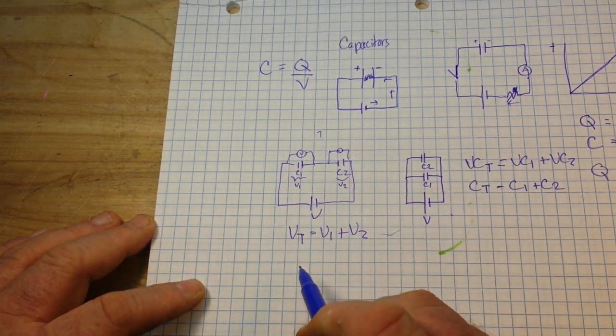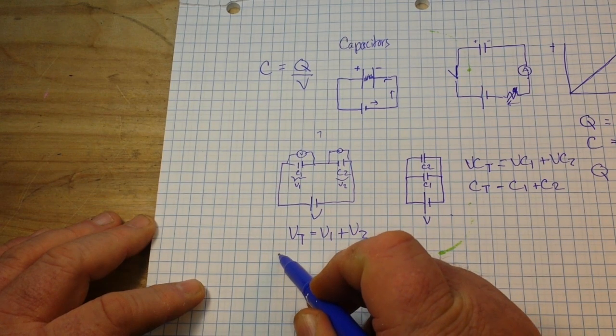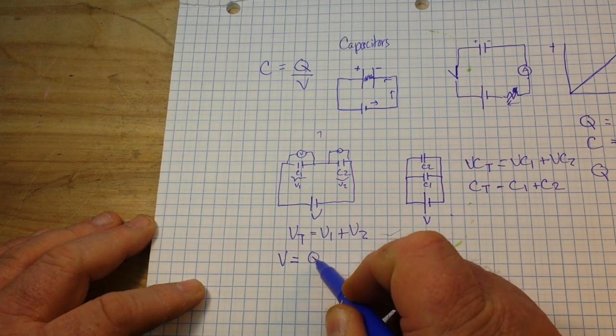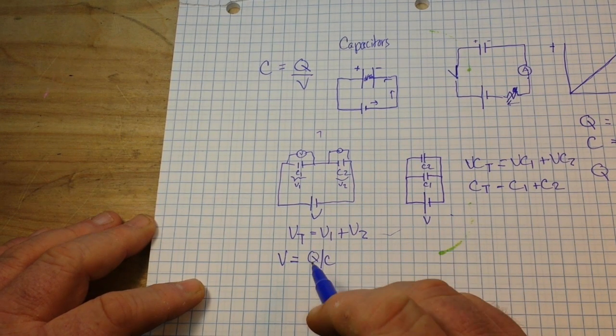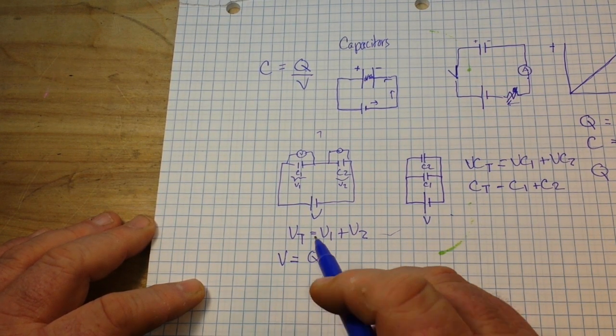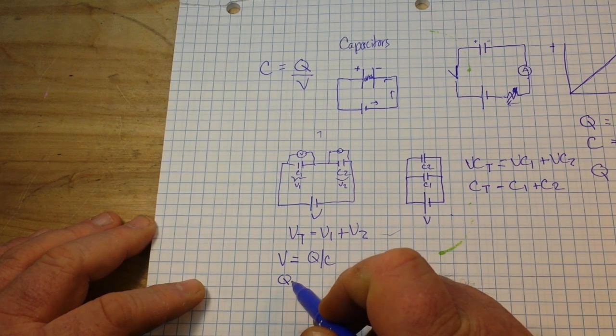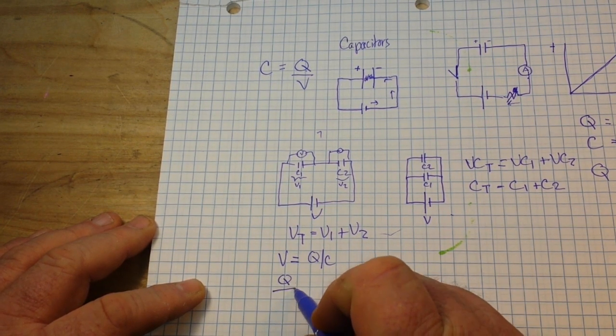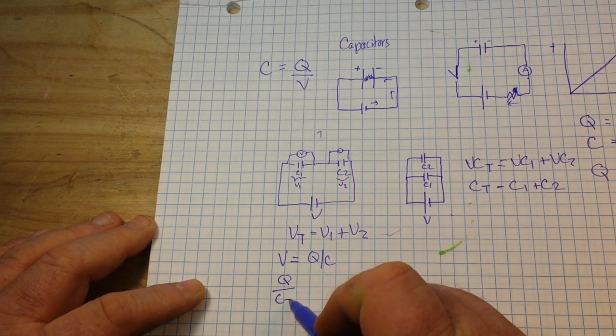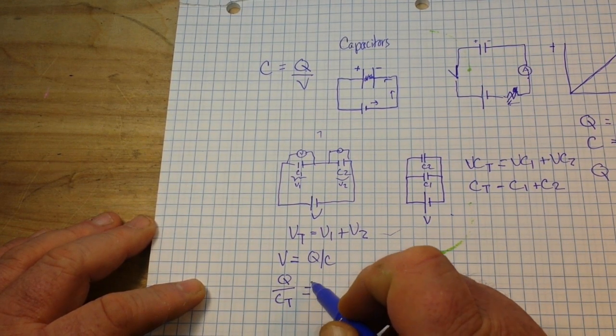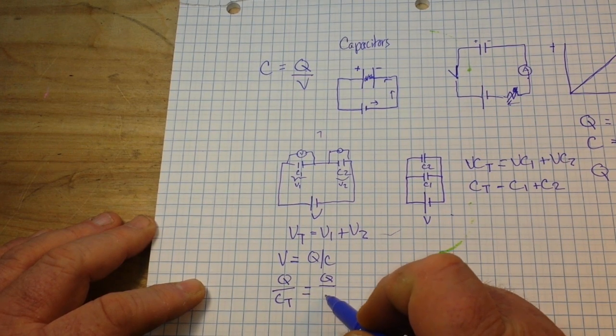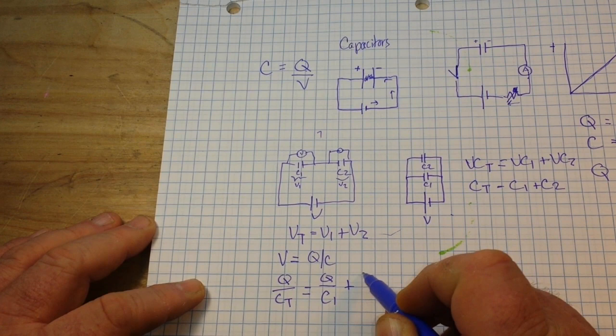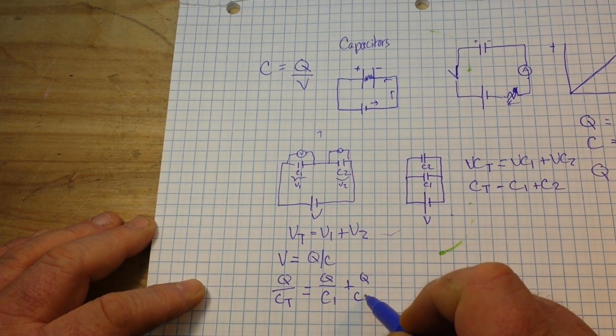And, like we stated up here, we know that V equals charge divided by capacitors. So, our charge total, capacitance total, is equal to the charge of C1 plus the charge of C2.